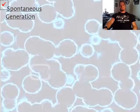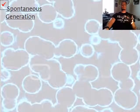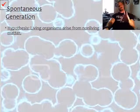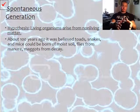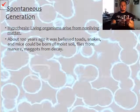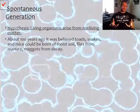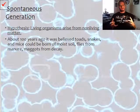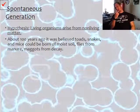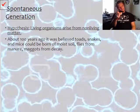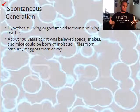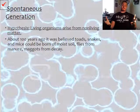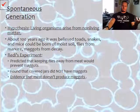Back in the day, there was a theory known as spontaneous generation. The hypothesis was that living organisms can arise from non-living matter. Hundreds of years ago, it was believed that toads, snakes, and mice could be born from moist soil; flies from manure; and maggots from decay. People noticed flies appearing around piles of manure on farms, and they assumed those flies were coming from the manure. Same thing with maggots — they saw them in decaying flesh and assumed that's where they came from.